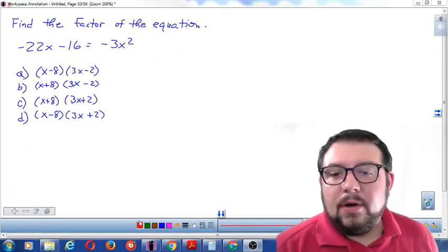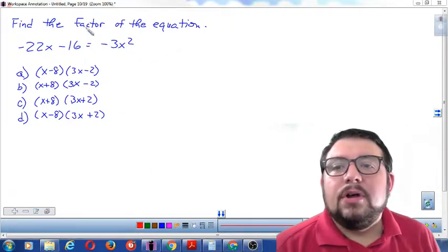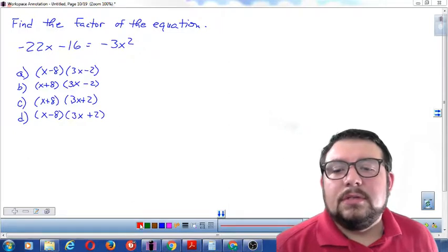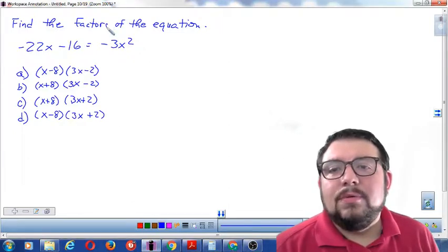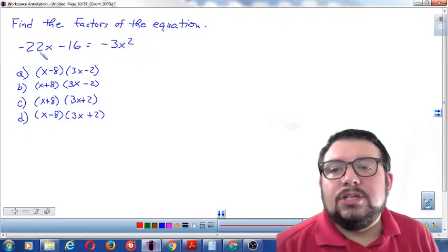Alright, so let's take a look at our problem. We're going to find the factors. This should say factors—that has a typo. We're going to find the factors of the equation.